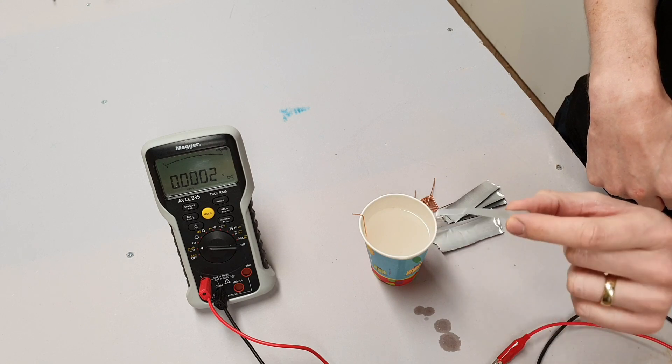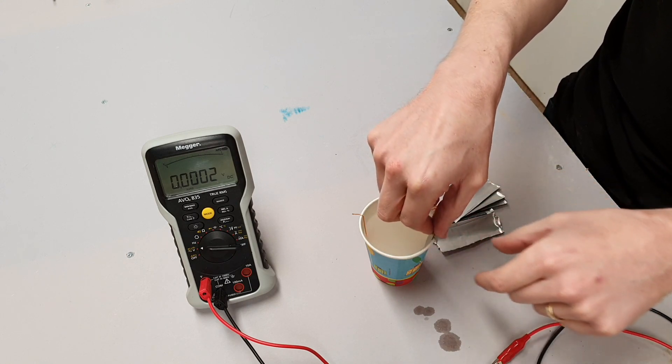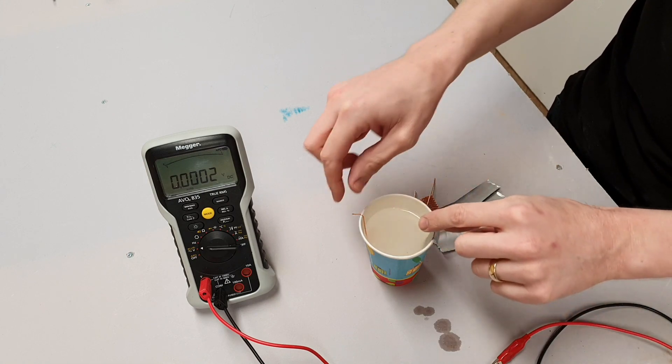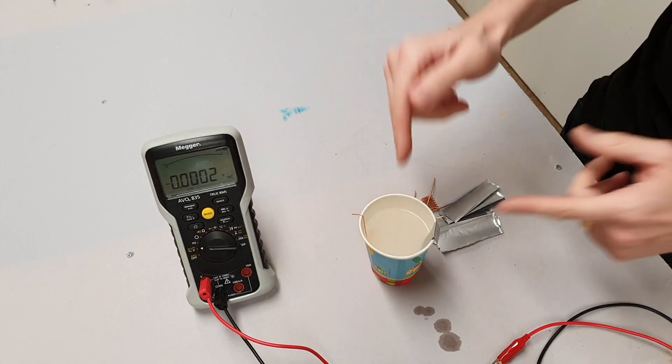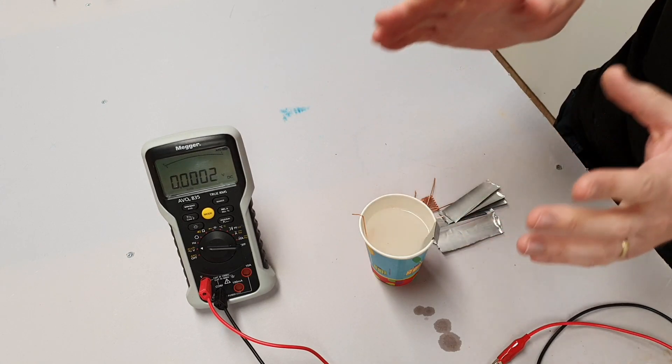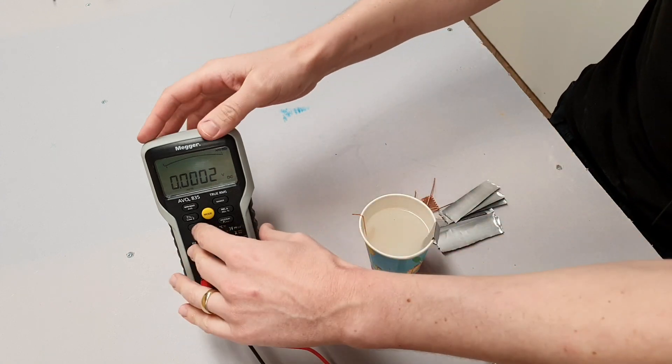Now if I drop that into here, I've got both of these just hooked on over the edge. Hopefully when I connect my multimeter up to these two pieces of metal, we should see that it is producing a voltage.